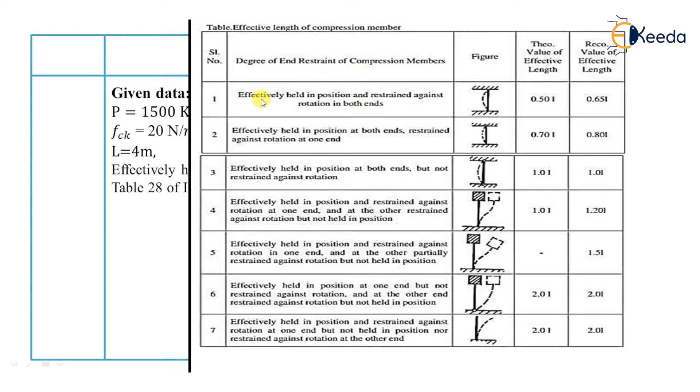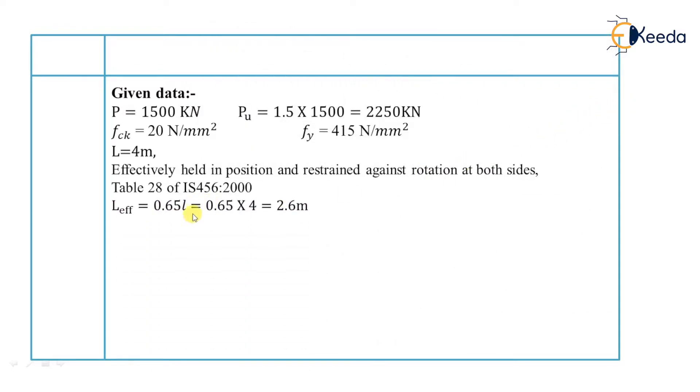And it is our case number one and for that IS code recommends the value of effective length is equal to 0.65L. So we will take 0.65 into L. So 0.65 into 4 which is equal to 2.6 meter and this is our effective length.